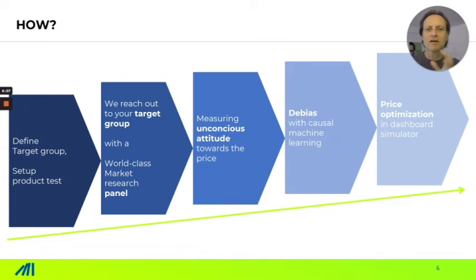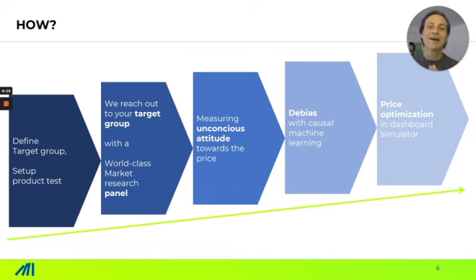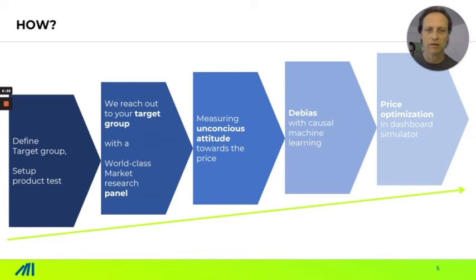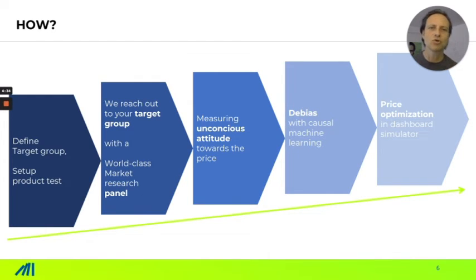There are five steps. First, you define your target group, so the research is really targeted to your customers, and you set up your product test by yourself within five minutes. Then we reach out to your target group using a world-class market research panel. Then we use the so-called Implicit Association Test and measure the unconscious attitude of your target group towards the prices.